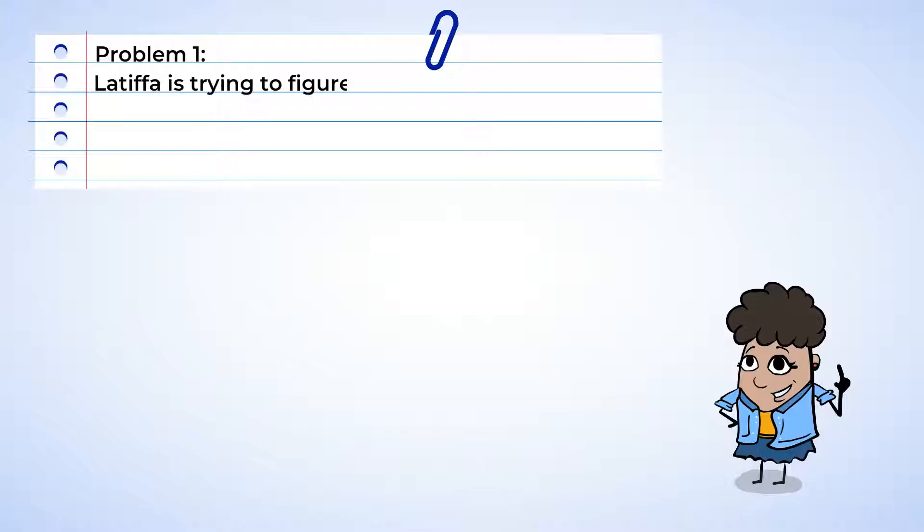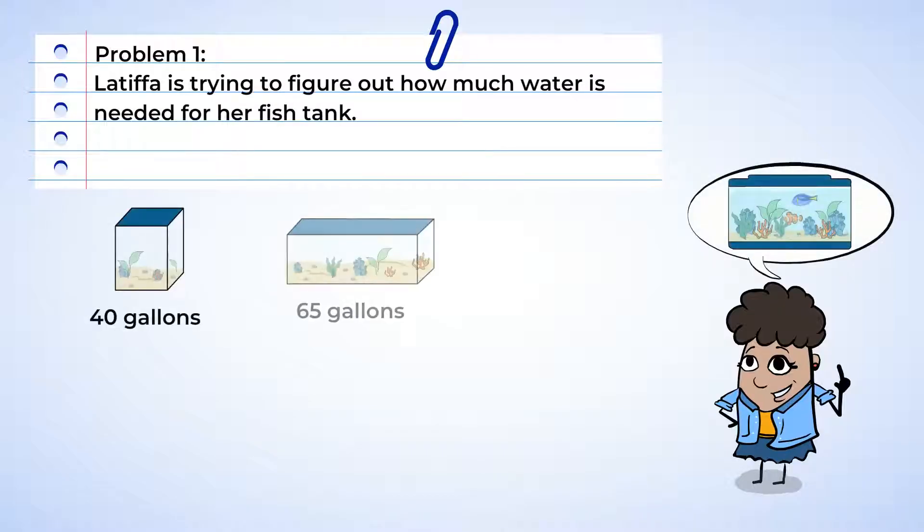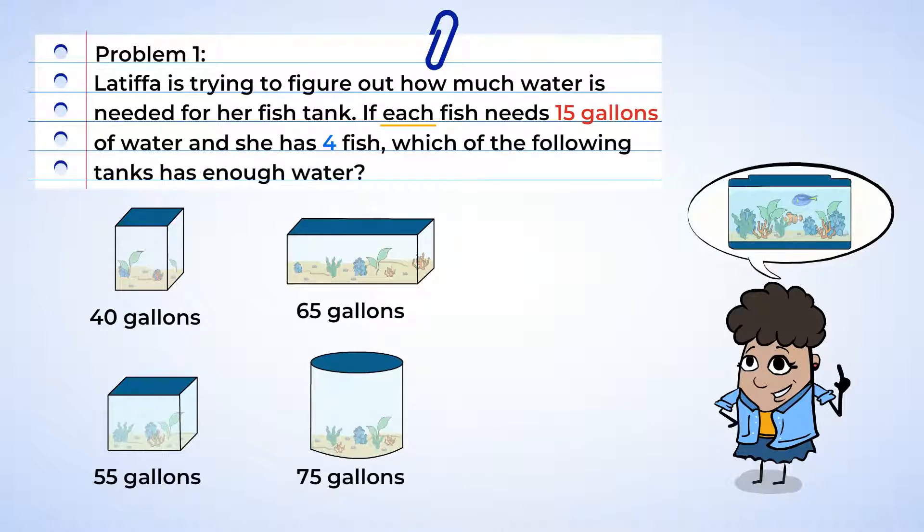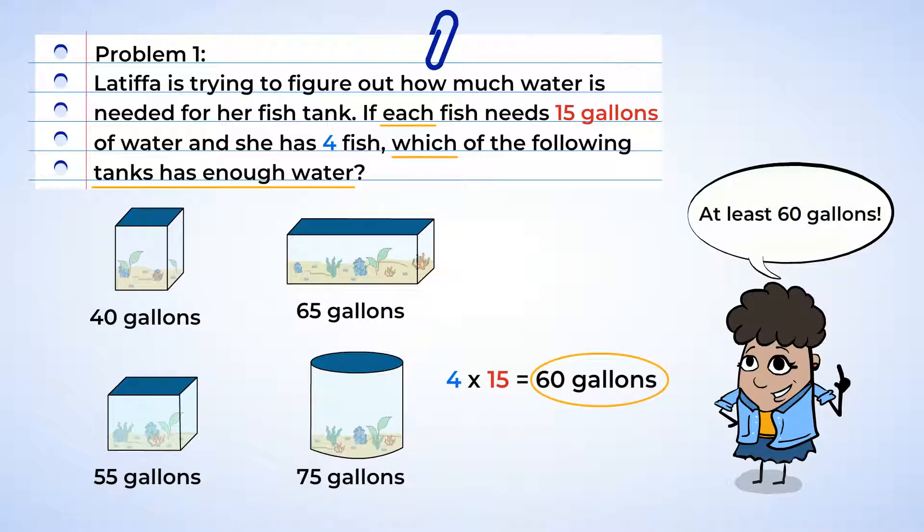Here's Latifa, and she's looking at water tanks for her fish. She's trying to figure out how much water is needed for her fish tank. If each fish needs 15 gallons of water and she has 4 fish, which of the following tanks can hold enough water? Well, we need to find the total amount of water needed for all her fish. So, 4 multiplied by 15 gallons of water is equal to 60. And that means we need to find a tank that can hold at least 60 gallons of water.